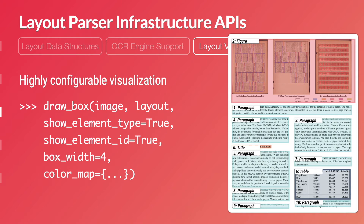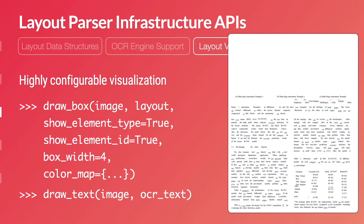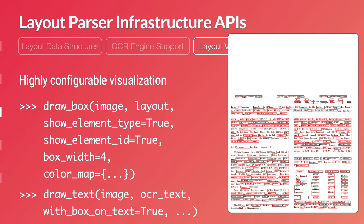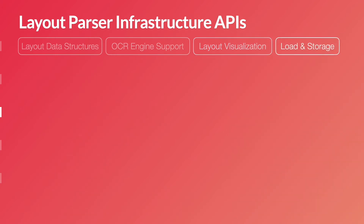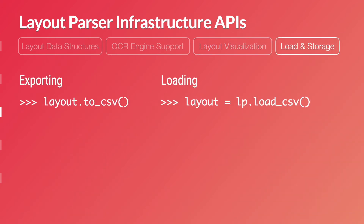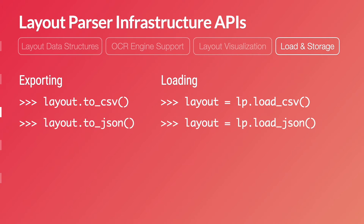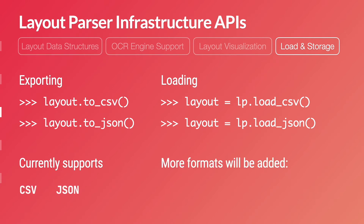A similar level of customization is also supported for draw text, which is used for displaying OCR text based on detected 2D positions on the page. Finally, Layout Parser supports a unified API for exporting and loading data into different formats. Currently, we support general formats like CSV and JSON, and more domain-specific formats like Pages, METS, or HOCR will be added in future updates.